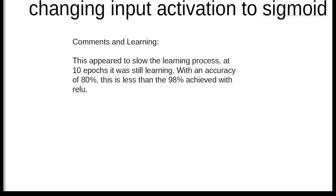I changed the input activation of the front-end convolutional filter neurons to sigmoid and changed them from RELU. It slowed the learning process significantly, and at 10 epochs it looked like it was still learning and had an accuracy of 80% only. This is way less than the 98% achieved with the RELU, which is a much more efficient algorithm.